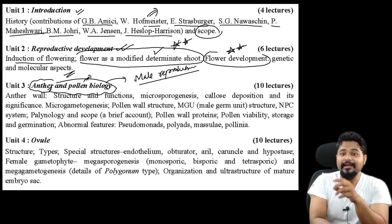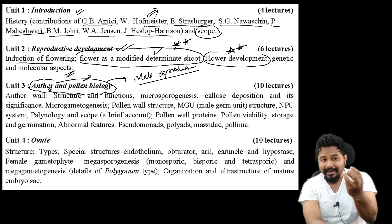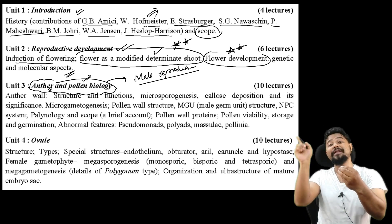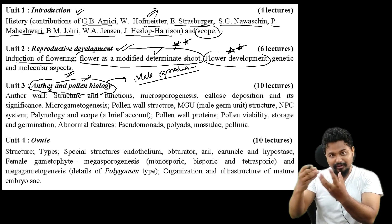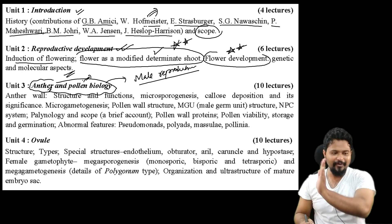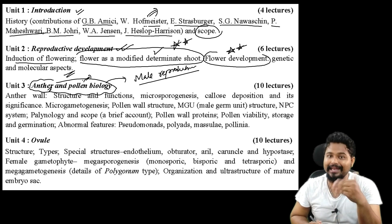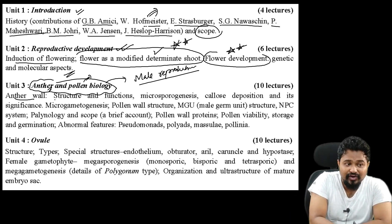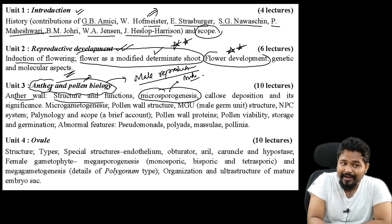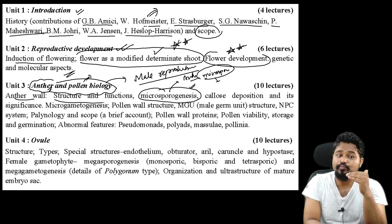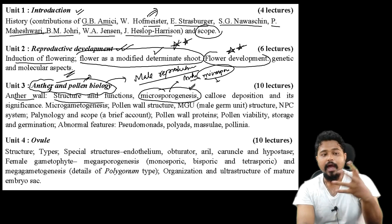Pollen grains are the male gametophytes. Male gametophyte fuses with female gametophyte - this leads to reproduction, producing fruit and seed. We focus on Unit 3: male reproductive structure - structure and functions, microsporogenesis. Microsporogenesis is the process of microspore development. Pollen grains are called microspores, and their development process is called microsporogenesis.